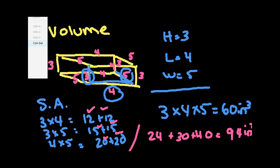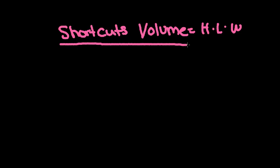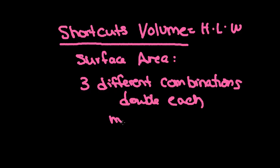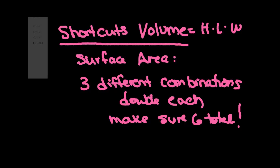So that's it. Those are the shortcuts for finding the volume, which is just your height times your length times your width or base, height, length, whatever you want to call the different sides. But the three unique sides, and your shortcut for your surface area is the three different combinations. Double each one. Make sure you have six total before you add. And you should be good to go, finding your volume of your rectangular prisms and surface area.